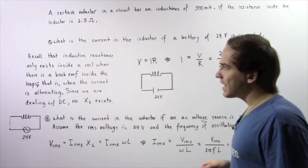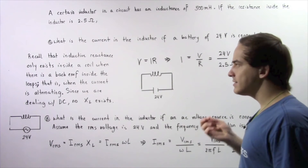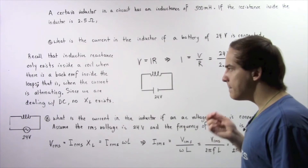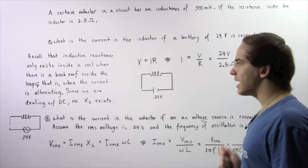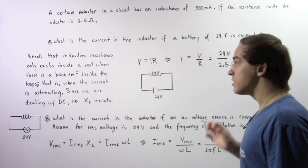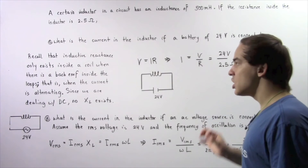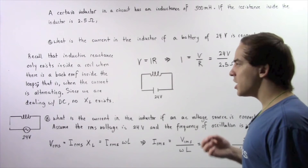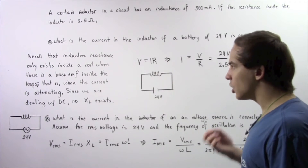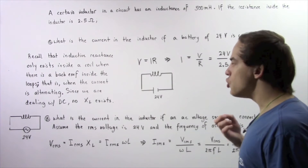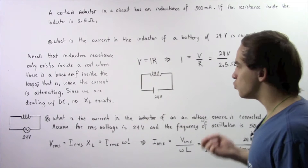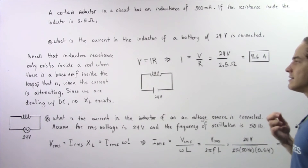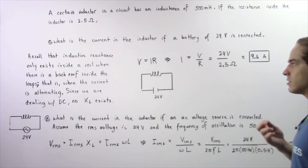Recall that inductive reactance only exists inside a coil when there is a back EMF induced inside the loops of our inductor — that is, when the current is alternating. So since we are dealing with a direct current, no inductive reactance will exist inside our inductor.